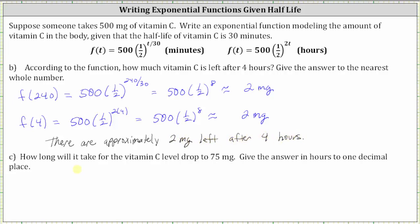The last question: how long will it take for the vitamin C level to drop to 75 milligrams? Give the answer in hours to one decimal place. I'll use the function with time in hours, which is f of t equals 500 times one-half raised to the power of 2t. We set f of t equal to 75 and solve for t, giving us the equation 75 equals 500 times one-half raised to the power of 2t.